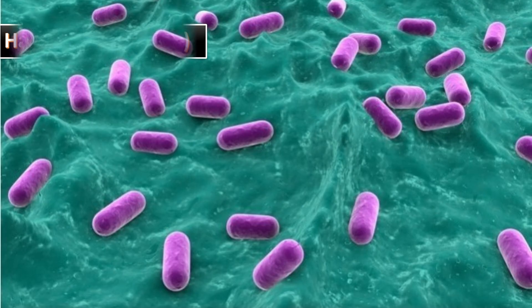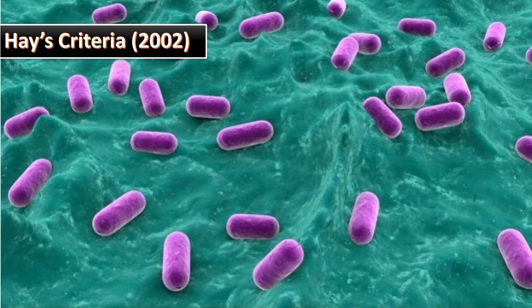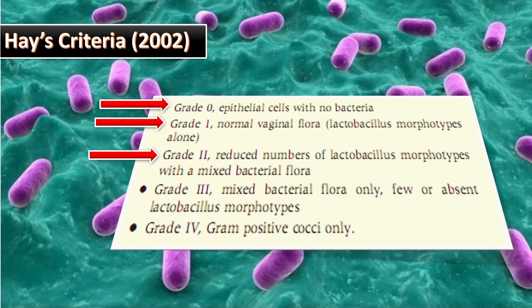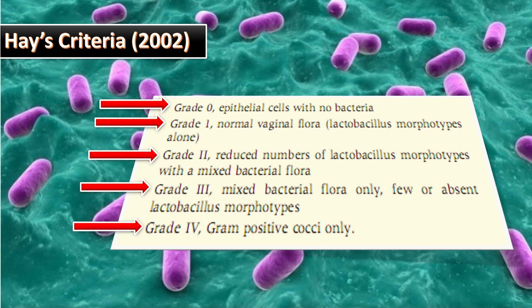The HACE criteria was introduced in 2002. Grade 0 means epithelial cells with no bacteria. Grade 1 means normal vaginal flora with lactobacillus morphotypes alone. Grade 2 means reduced numbers of lactobacillus morphotypes with a mixed bacterial flora. Grade 3 means mixed bacterial flora only, with few or absent lactobacillus morphotypes. Grade 4 means gram-positive cocci only.